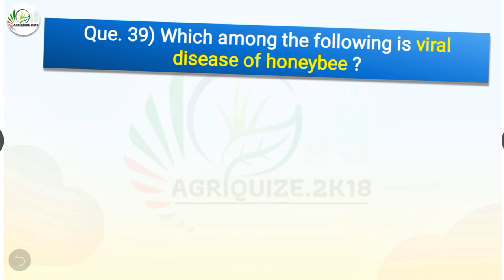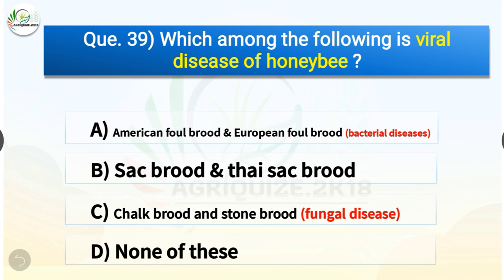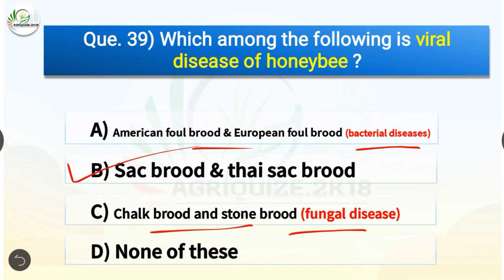Question number thirty-nine: which of the following are viral diseases of honeybee? Options are American foulbrood and European foulbrood, sacbrood and thai sacbrood, chalk brood and stone brood, or none of these. The correct answer is option B, sacbrood and thai sacbrood. American foulbrood and European foulbrood are bacterial diseases, and chalk brood and stone brood are fungal diseases.